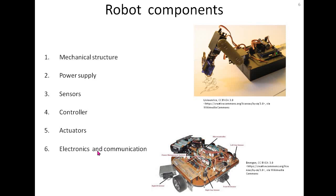Finally, electronics and communication: to communicate between actuators, sensors, and the microcontroller, we need electronics to filter and amplify signals, convert signals from analog to digital or digital to analog, and some kind of communication medium — wires — to connect sensors, microcontroller, and actuators.